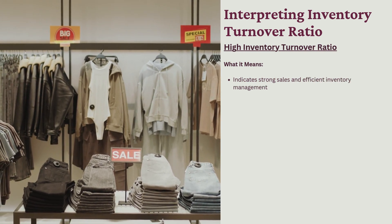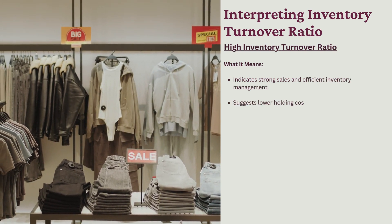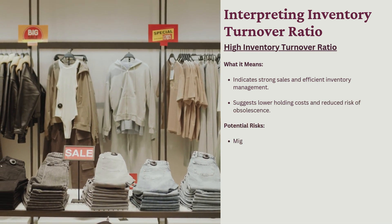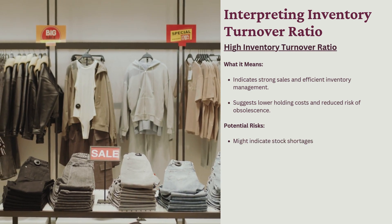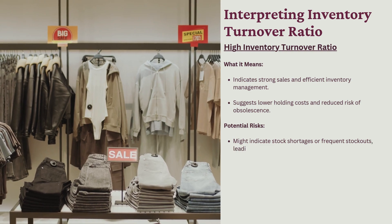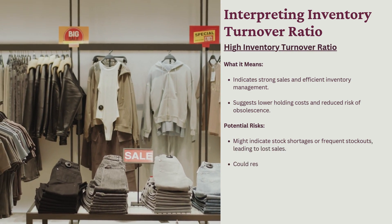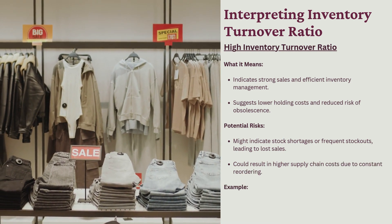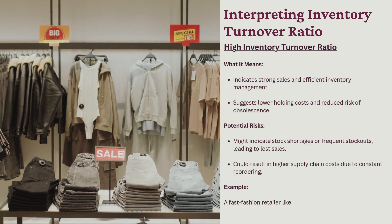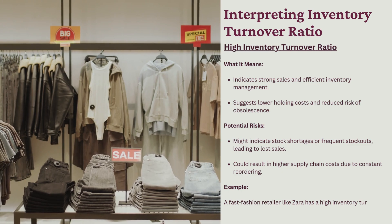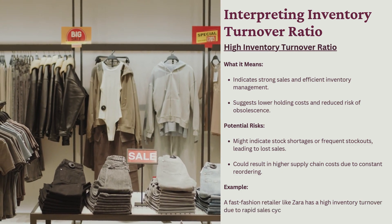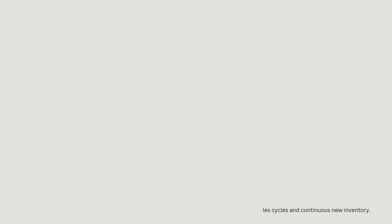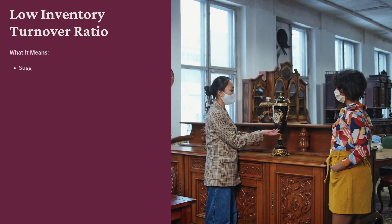Interpreting the inventory turnover ratio. High inventory turnover ratio: indicates strong sales and efficient inventory management. Suggests lower holding costs and reduced risk of obsolescence. Potential risks: might indicate stock shortages or frequent stockouts, leading to lost sales, and could result in higher supply chain costs due to constant reordering. Example: a fast fashion retailer like Zara has a high inventory turnover due to rapid sales cycles and continuous new inventory.